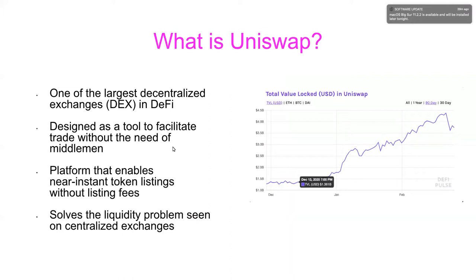For those unfamiliar, Uniswap is one of the largest — if not the largest — decentralized exchanges in DeFi. It's a fully decentralized on-chain protocol that allows token exchange on the Ethereum network, designed to facilitate trade without a middleman. Unlike Binance, which depends on order books where a trade won't execute without a matching order, Uniswap allows the community to provide liquidity for instantaneous trades.